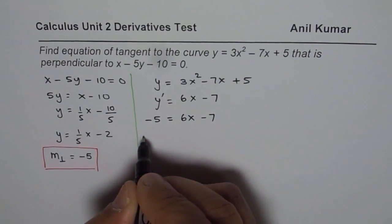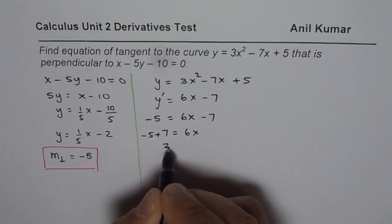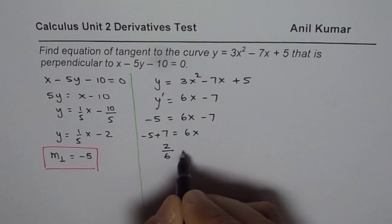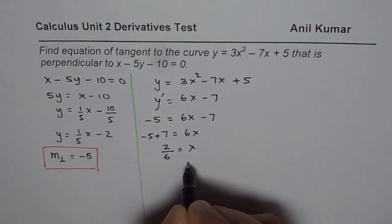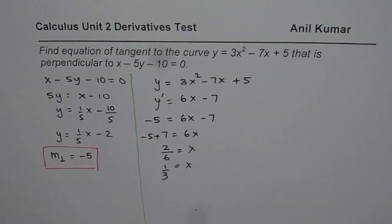Solve for x. So minus 5 plus 7 equals 6x which is 2 divided by 6 is the value of x. So x equals 1 over 3. So we found that x value is 1 over 3.